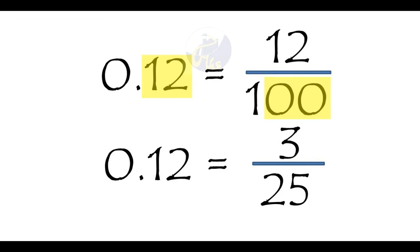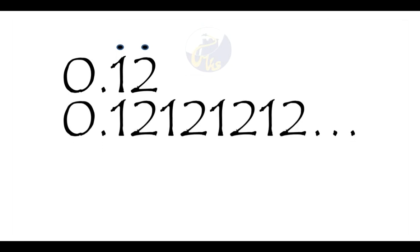Now a recurring decimal will often look like this. I've got 0.12 again but with two little dots above the 1 and the 2. Sometimes there's one dot, sometimes there's two. What that means is there's a repeating pattern, so in this case there's a series of 1-2-1-2-1-2 going on forever. The trick is to change this into its fraction.